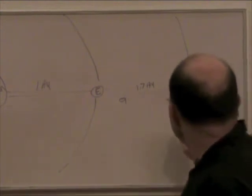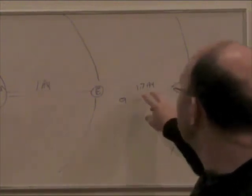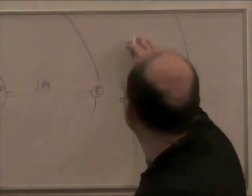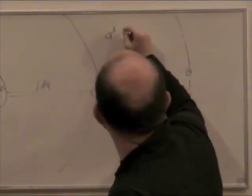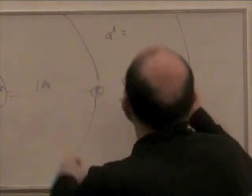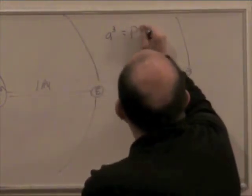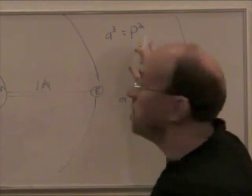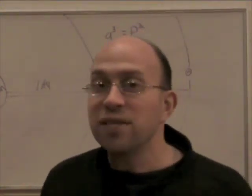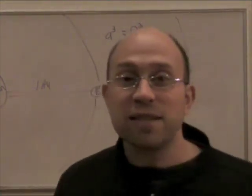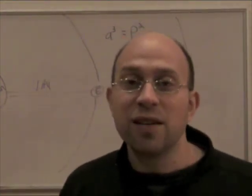The key thing that Kepler found to actually figure this out was called Kepler's third law. And that says that A cubed, remember A is the size of the orbit, is equal to P squared. Now, P is the period, the time it takes to go around. And that's really easy to measure. You just wait enough years for the planet to come back to the same position. And that's the period.